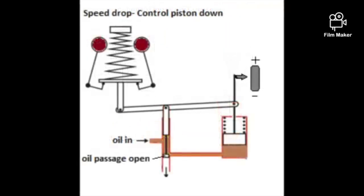When there is a drop in the engine speed, the increase in load moves the fly weights inside and pushes the control piston downwards via linkages.